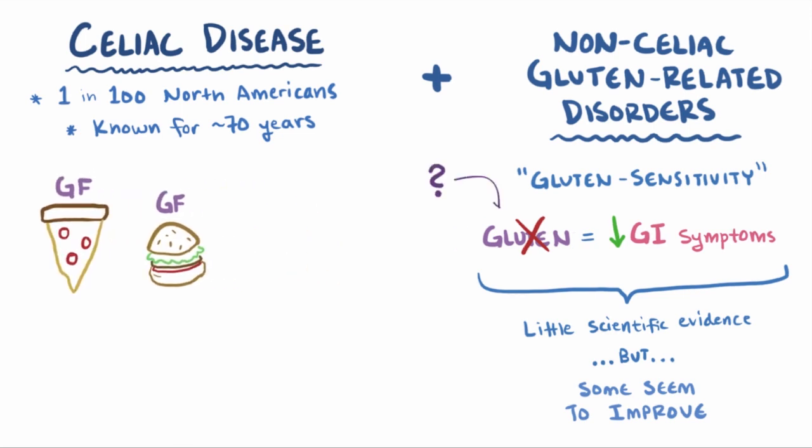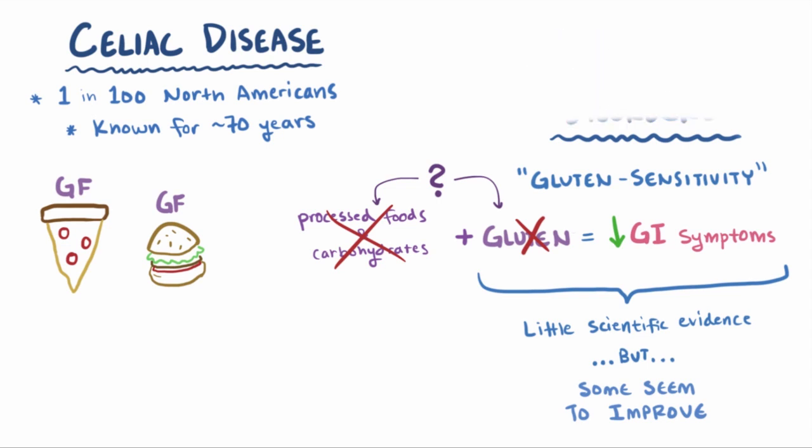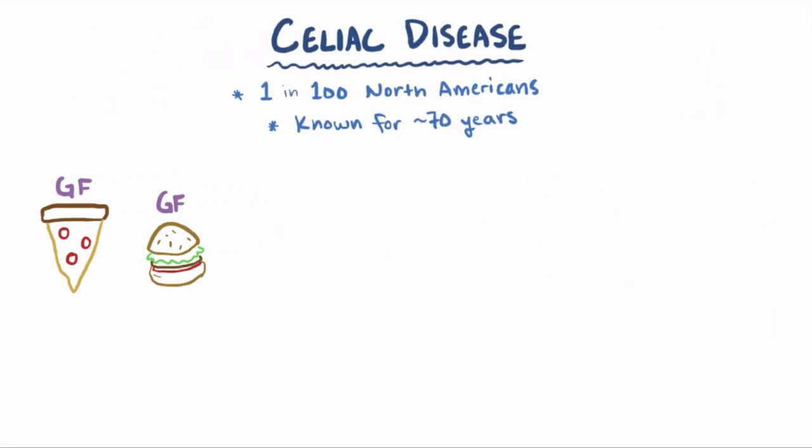Whether that's from removing gluten specifically or, more broadly, an adherence to a diet that's typically much lower in processed foods and carbohydrates remains to be seen. Alright, let's get back to celiac disease, though.